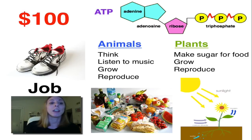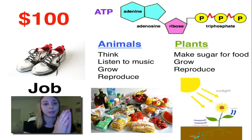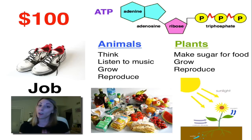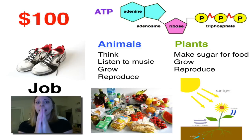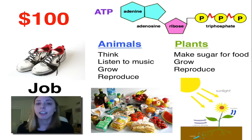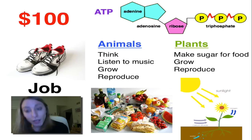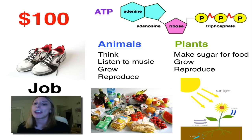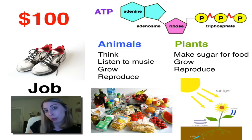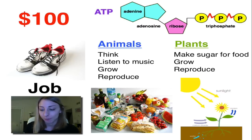So if you want these shoes, you need a job to get the money to buy them. If you want to think, you've got to have the food to get the money — the ATP — to think. If you are a plant and want to grow and reproduce, then you need to carry out photosynthesis to get the food, to get the money, which is the ATP.